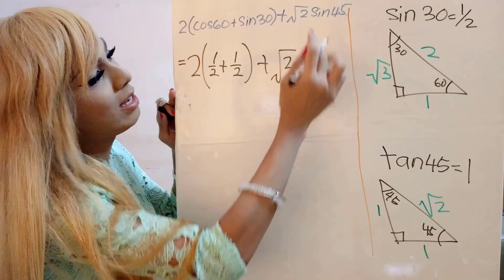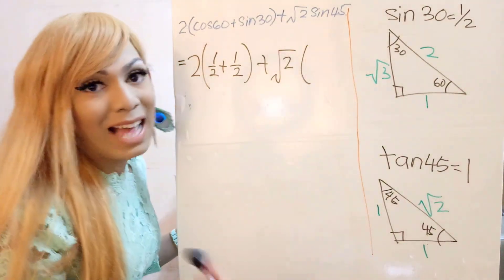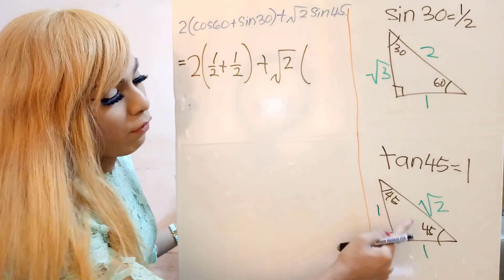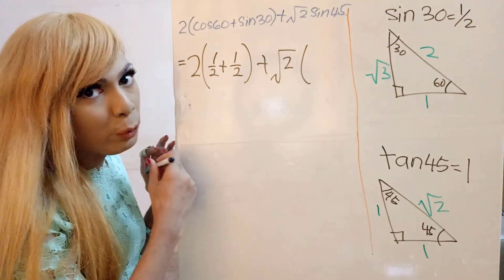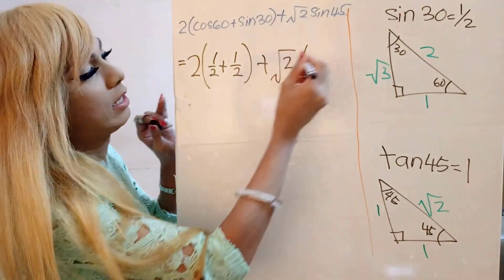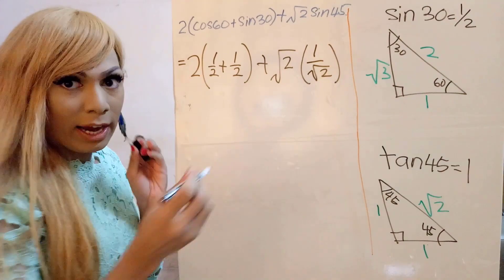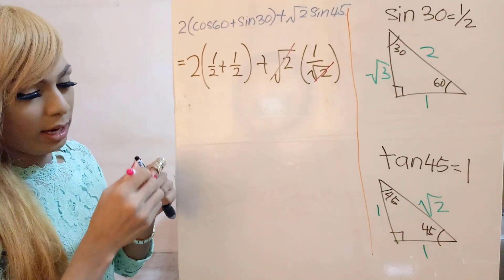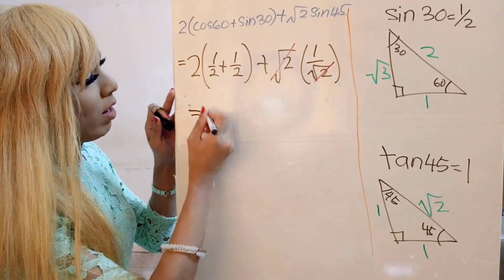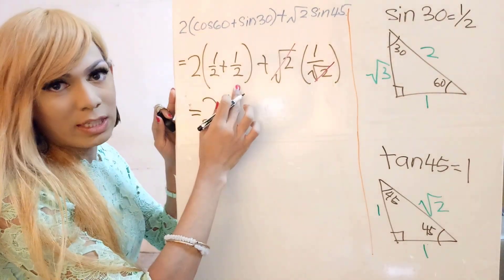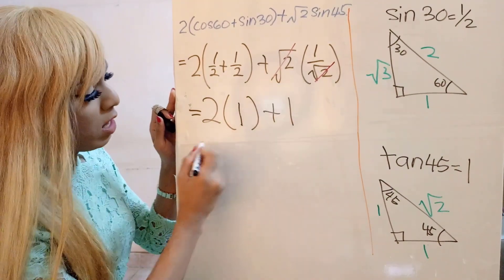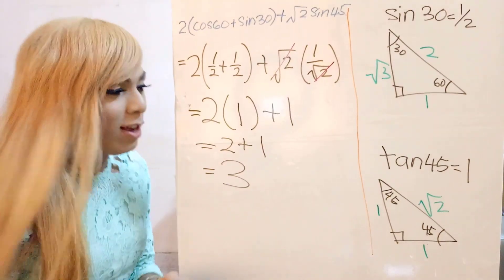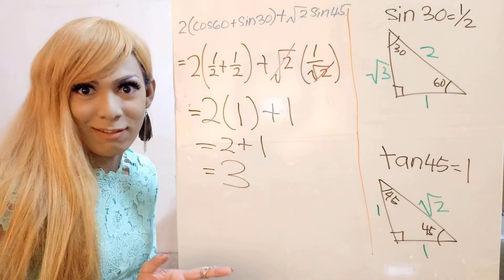Plus square root 2 sine 45. Sine is actually equivalent to SOH, which is opposite over hypotenuse. So in this case, for the 45, opposite is 1, hypotenuse is square root 2. Therefore, 1 over square root 2. So I can cut this off because of the division rule. And then for this one, I have 2. Half plus half, it's going to be 1, and then plus another one. So 2 times 1 is 2. Plus this one, equivalent to 3. There you have it, guys. Easy peasy lemon squeezy.